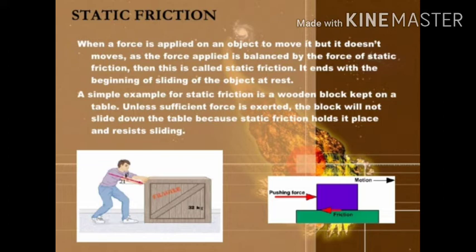The definition states: when a force is applied to move an object but it does not move, the applied force is balanced by the force of static friction. Now, what is limiting friction? The maximum value of static friction — by overcoming which an object comes into motion from rest — is known as limiting friction. This is a very important point.